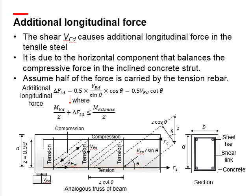This additional force is caused by the horizontal components of the diagonal strut. It is calculated by multiplying this force with the cosine of theta, as represented here. It is assumed that half of the force is carried by the tension steel bar.